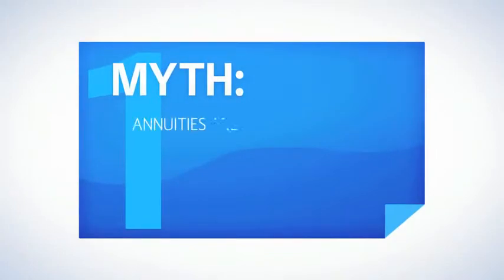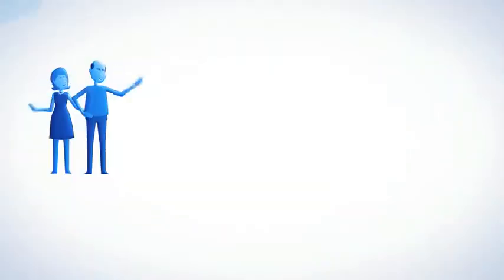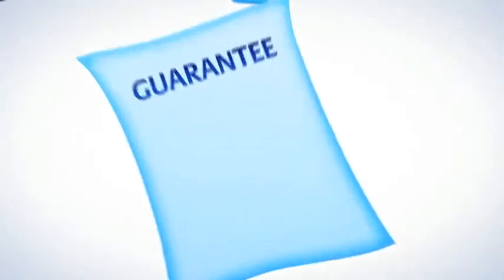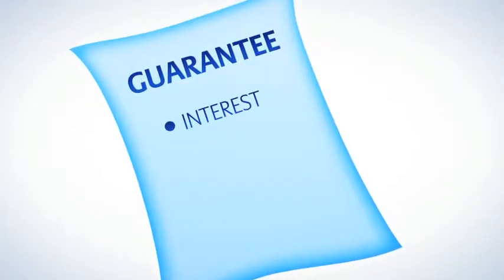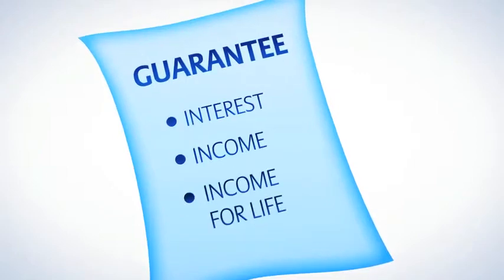Myth number one: annuities are too complicated. The truth is, even though the mathematics behind an annuity may seem complicated, as a concept, annuities are not rocket science. You give money to an insurance company, and in return, they give you a guarantee such as a guaranteed interest rate, guaranteed income for a specified period of time, or even guaranteed income for life.